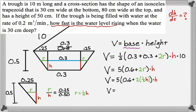So V is 5, the quantity 0.6, 2 times 1 half of H, and then the whole thing times H. And we can clean that up a little more. This, and then I'm going to distribute everything and get volume is 3H plus 5H squared.